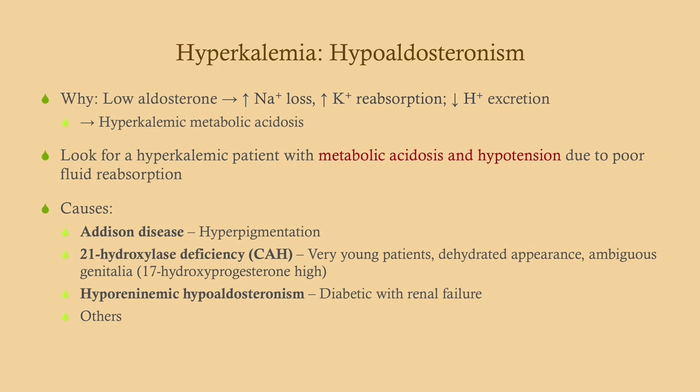Hypoaldosteronism causes increased sodium loss and increased potassium reabsorption — essentially the complete opposite of hyperaldosteronism, which causes hypokalemia. These patients will have metabolic acidosis and hypotension due to poor fluid reabsorption, since sodium loss leads to water loss. So the presentation is hypotension, metabolic acidosis, and hyperkalemia. Addison's disease is a potential cause — low aldosterone levels result from an autoimmune attack on the adrenal glands.